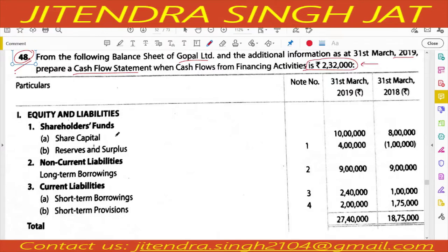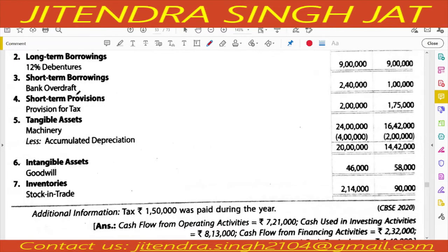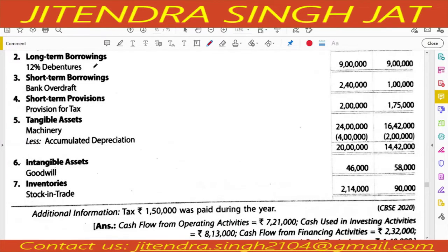The balance sheet includes: share capital, reserve and surplus, non-current liability, long-term borrowing, short-term borrowing, short-term provisions, tangible assets, intangible assets, non-current investment, current investment, inventories, and cash and cash equivalents. Reserve and surplus: 4 lakh and 1 lakh. 12% debentures, bank overdraft, provision for taxes in short-term provision. Machinery with accumulated depreciation, goodwill from 58 to 46 meaning amortization, and stock in trade.